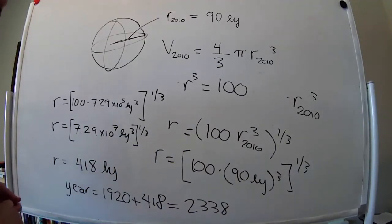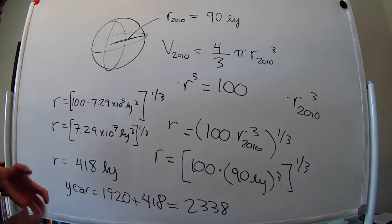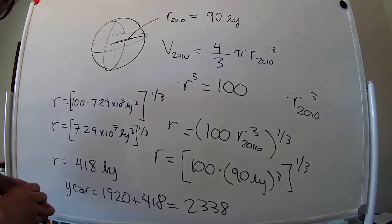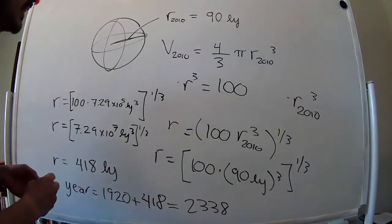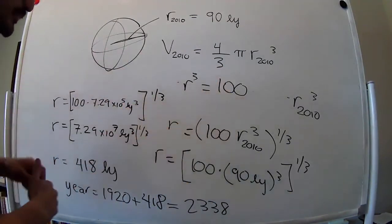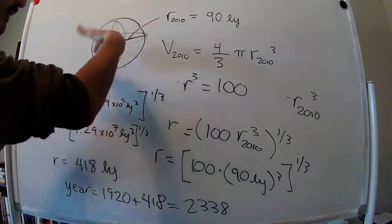2338 is when this volume is going to be 100 times bigger. So maybe we will be detected by extraterrestrials. It's kind of difficult, perhaps unlikely.